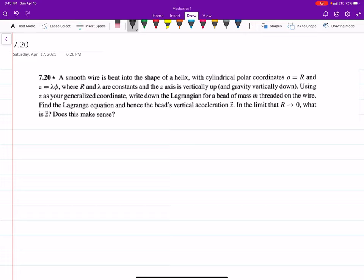And z is lambda phi, where R and lambda are constants, and the z-axis is vertically up, gravity vertically down.